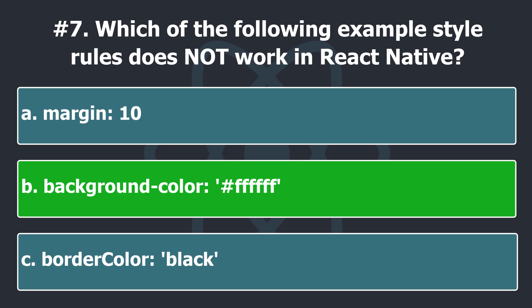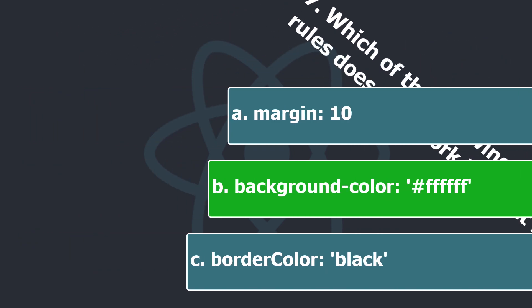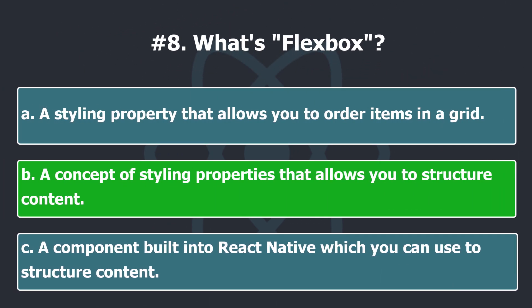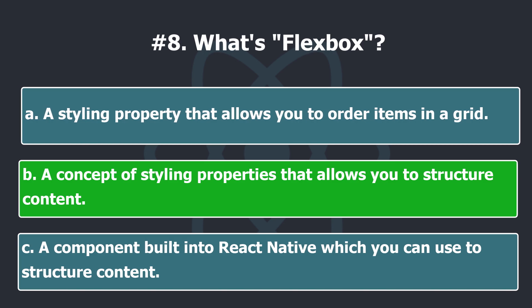The style names and values usually match how CSS works on the web, except names are written using camel casing — for example, backgroundColor rather than background-color. Flexbox is a concept of styling properties that allows you to structure content and design to provide a consistent layout on different screen sizes.